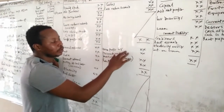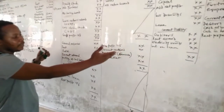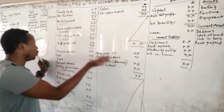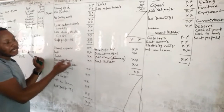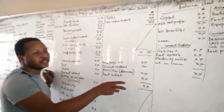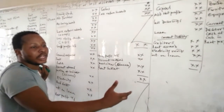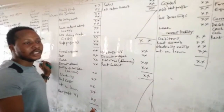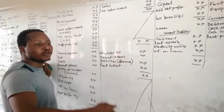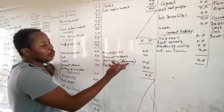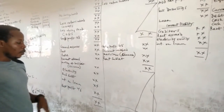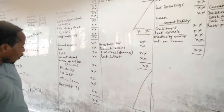Bring down the gross profit. On the income side, you may have discount received. Also include provisions decrease — if you had set aside a provision and it decreases, it goes on the income side. Any increase in provision for bad debts goes on the debit/expense side.